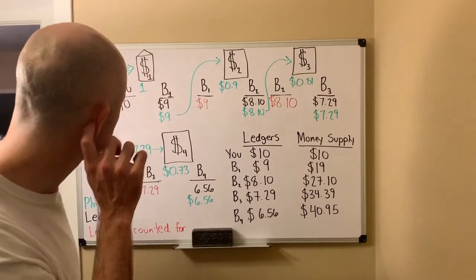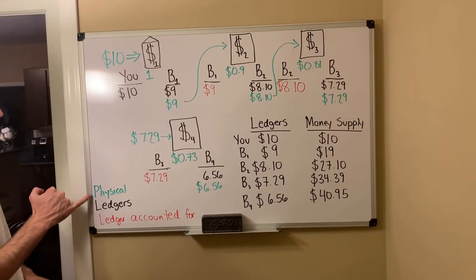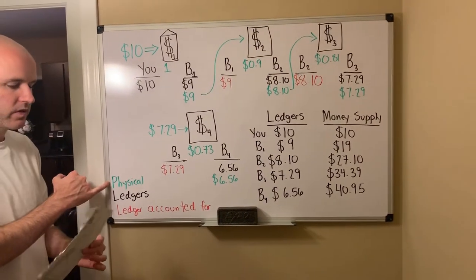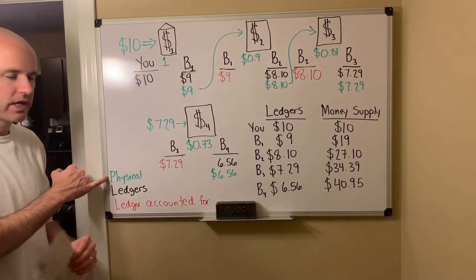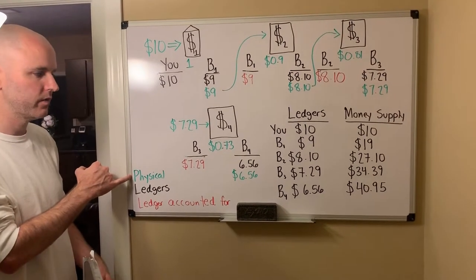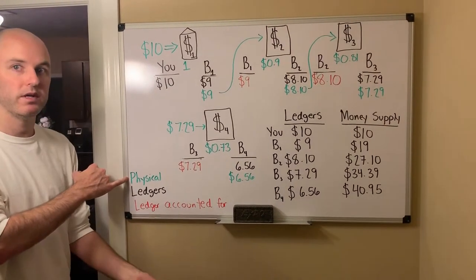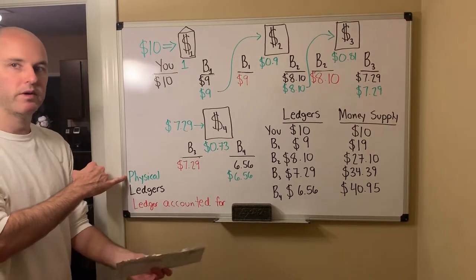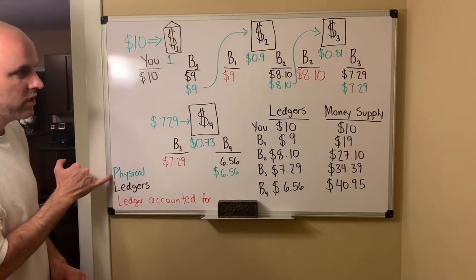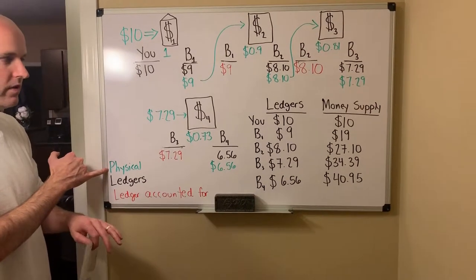First, down here, remember that the green signifies actual physical dollars — the physical dollars in your wallet, regardless of what currency you carry, whether it's a real, a pound, a euro, a dollar, whatever. Green denotes physical. That's the physical money trail.